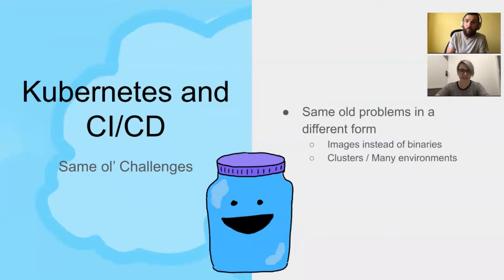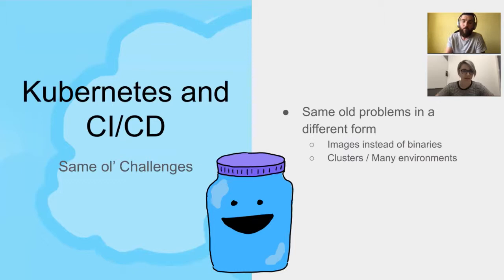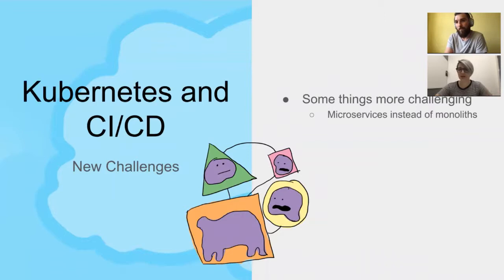For CI/CD, Kubernetes gives us some opportunities but also some new challenges. Containers make it easy to have all the dependencies you need, but you still have to distribute those containers. And if we break everything down from monoliths into microservices, those microservices inherently have more moving pieces, more dependencies, and are more difficult to manage. That's the landscape we're dealing with — that's what Cloud Native means for us.